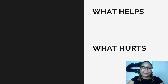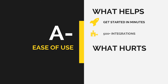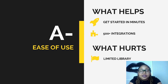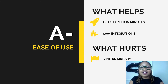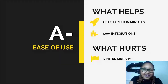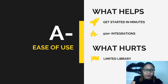Now let's talk about ease of use. I give Zapier an A-minus. It's pretty good — you can get started in minutes and there are hundreds of integrations, different tools you can connect. It's pretty simple to set up. What hurts it is a limited library; not every single tool is there, which makes it a little more difficult to create your app hack. You might want to use a tool that's not compatible with Zapier and have to find another way to connect them. But I'd really look at what tools to use based on their compatibility with Zapier.